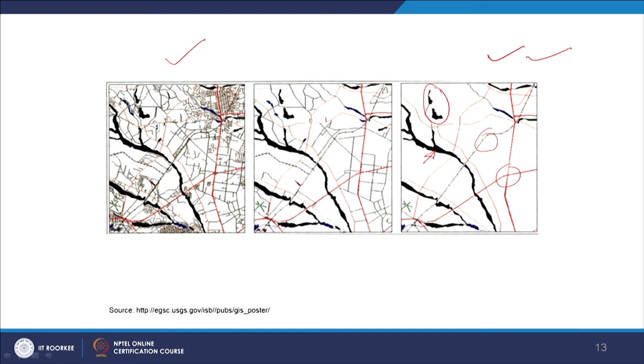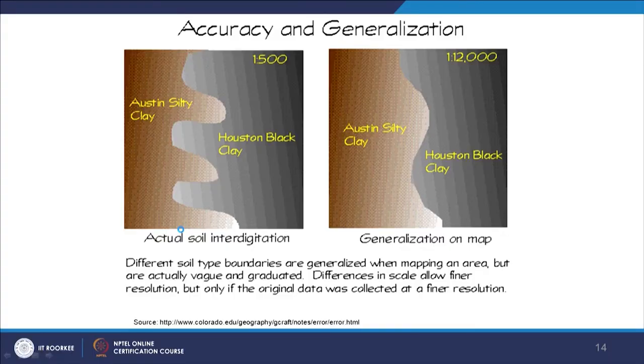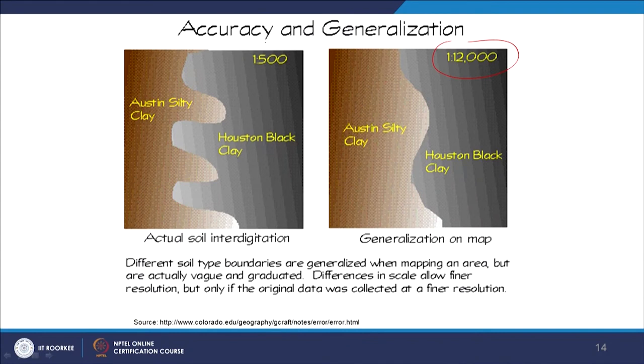Generalization is often needed along coastal boundaries where too much detail is not required and a smoother map appearance is preferred. When generalizing, accuracy is compromised, which is why original data must always be kept as backup. Scale also matters — at large scale all coastal line details are present, but at smaller scale those details are not needed and generalization is performed. For example, at scale 1:1000, buildings shown individually may be merged into a single line at a smaller scale.